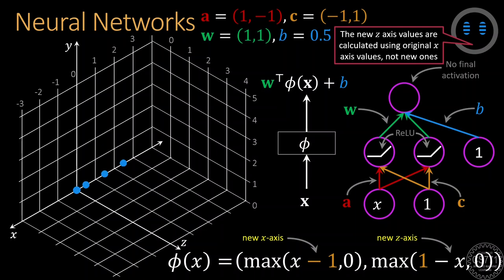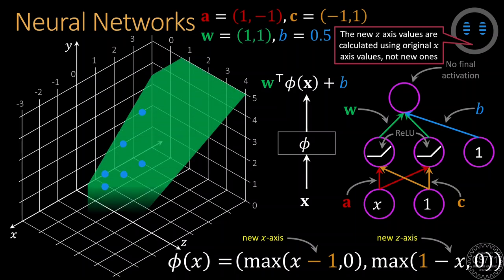The z feature value is ReLU applied to 1 minus x. This means that the last three points, whose original x feature had value greater than 1, will get their z-axis value truncated to 0 due to ReLU. The first three points that had x feature values less than 1 will take z feature values greater than 0. This gives us the final 2D features of the data points. Bringing back the label values by giving these points their appropriate y-coordinate values, we find that this new regression problem can now indeed be solved using a 2D linear model with model vector w as the all-ones vector and bias value 0.5.